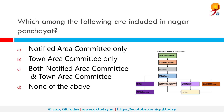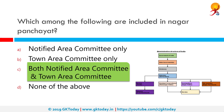Which among the following are included in Nagar Panchayat? The correct answer is both Notified Area Committee and Town Area Committee. Notified Area Committee, or Notified Area Council, is a form of urban political unit in India comparable to a municipality. Town Area Committee is a semi-municipal authority constituted for small towns and it exists in several states, of which Uttar Pradesh has the largest number.